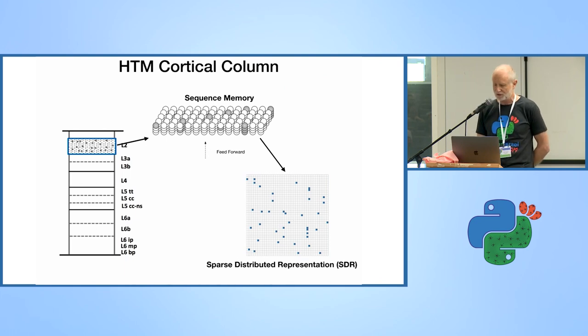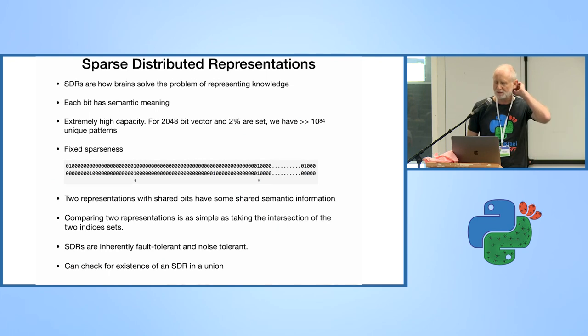If we would take a look above the sequence memory, just looking from above, and mark each of the columns that has at least one neuron active, we'd get this grid that you can see here in the right hand corner. This is called a sparse distributed representation. Sparse distributed representations are how our brains actually deal with knowledge and they're the structure that the brain transports around when it's processing. Each bit could have some semantic meaning. It is extremely high capacity.